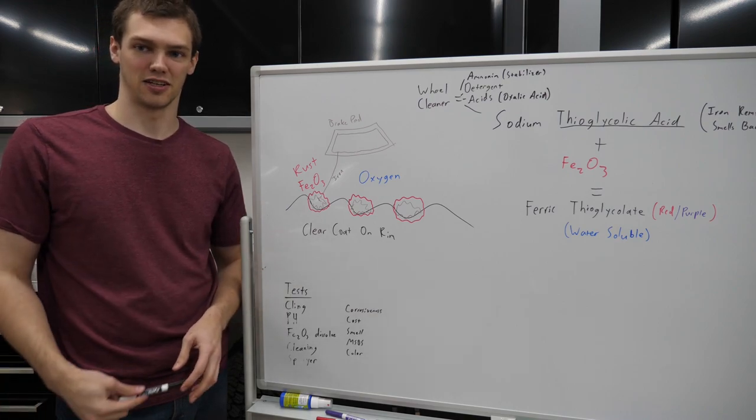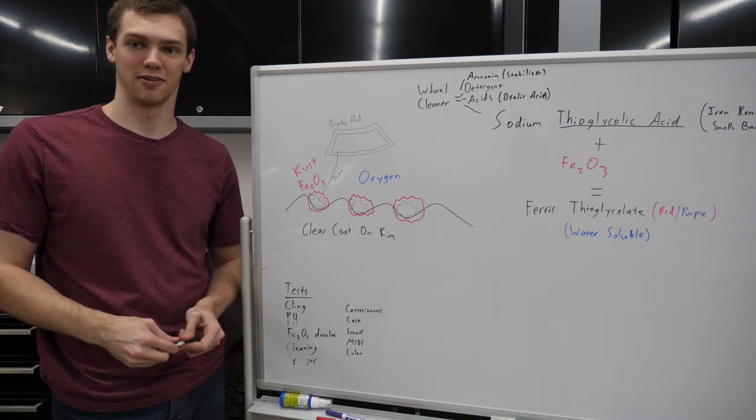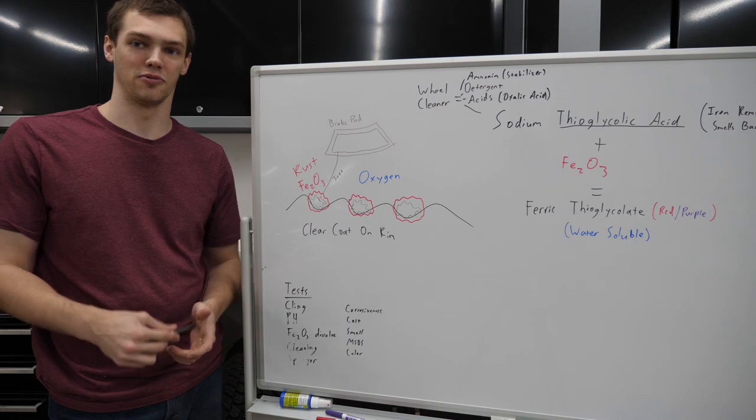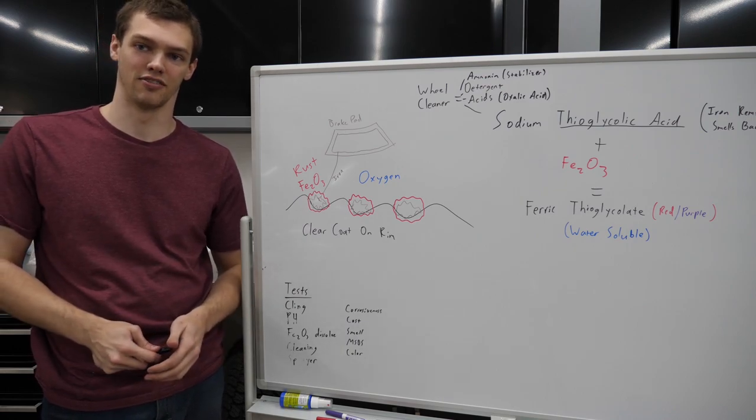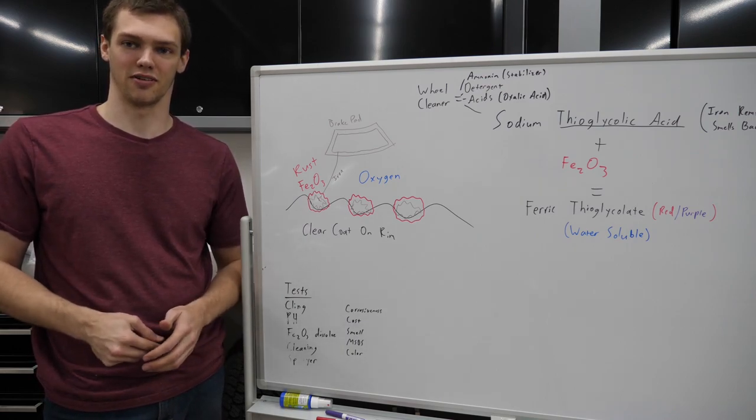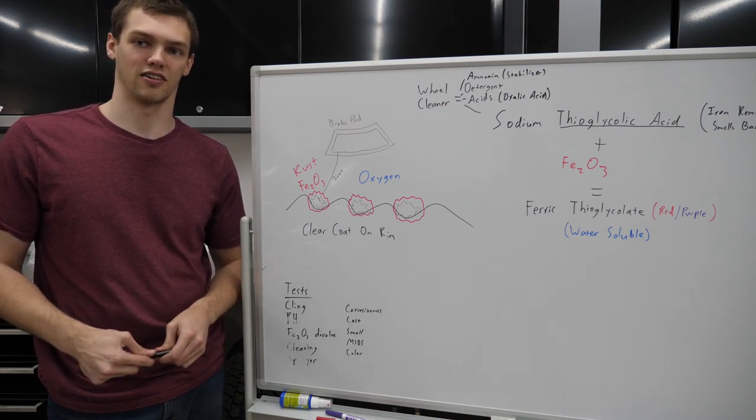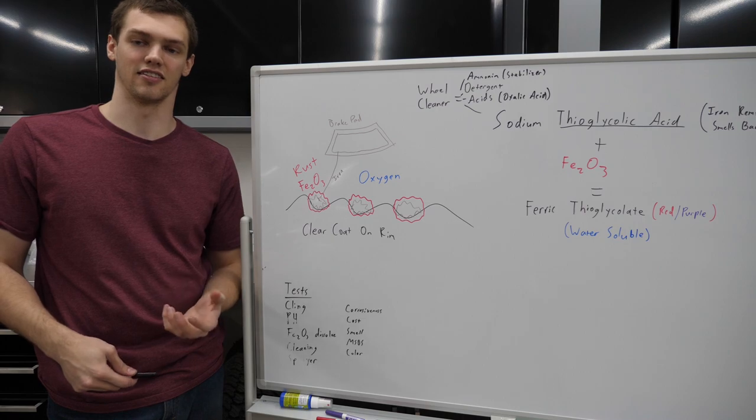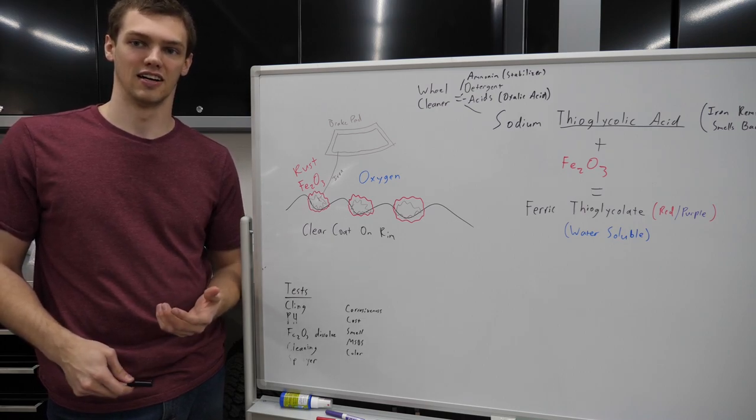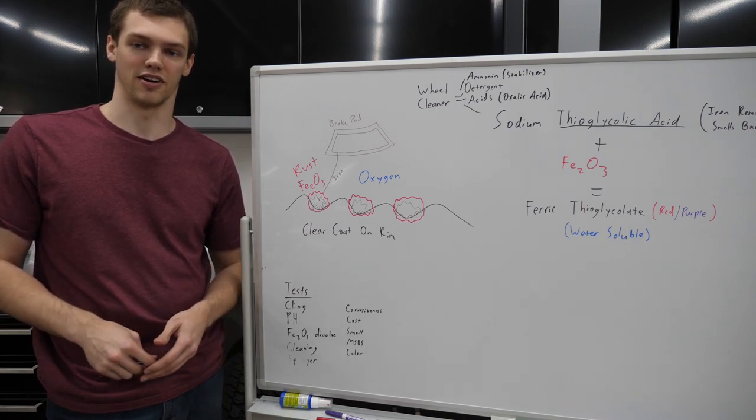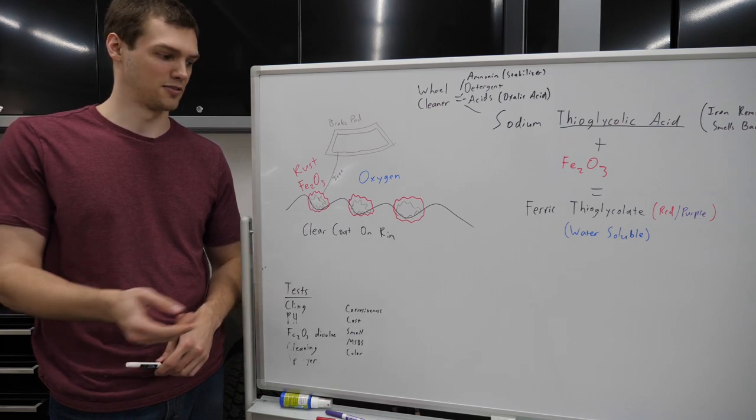This will be an in-depth breakdown of essentially what iron is like when it gets into the clear coat on your rims and the process that it takes to actually remove that. Since that's what generally people are most concerned with when you look at wheel cleaners, how effectively is it going to remove the iron that's in the contaminants or in the clear coat, which is different from obviously what's on the rest of your car.